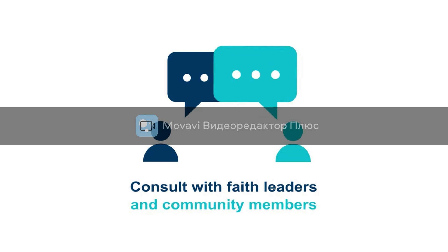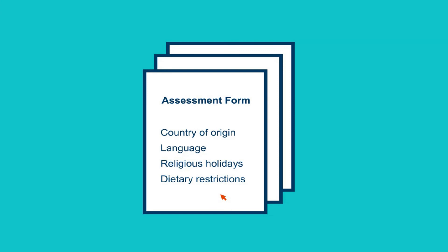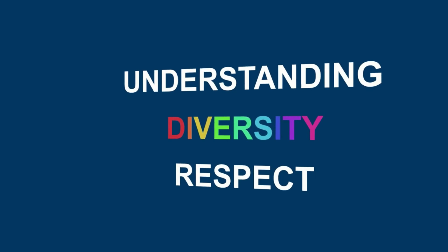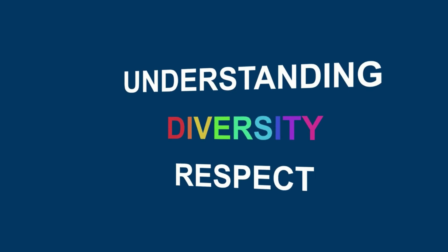Ensure the assessment, screening, and intake forms used take culture into consideration, so that you can plan and prepare accordingly. Understand how history for some may cause tension and cultural divides with other groups. Create group guidelines and program-specific activities to foster understanding, respect, and diversity. Arrange for translators and ensure that materials are produced in languages reflective of the populations you are serving. Working towards cultural competence is an ongoing process that requires commitment from individuals at all levels to ensure the creation and maintenance of an inclusive environment.